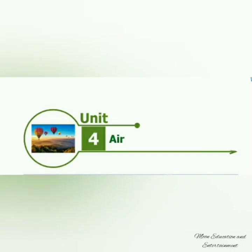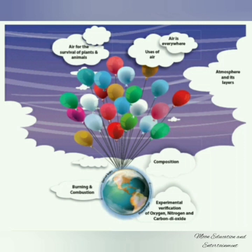Unit 4: Air. Air is one of the essential things for human beings and not only human beings but for all living organisms in the world. Air is necessary for the survival of plants and animals. Air is used for burning and combustion. Air consists of different gases which are used for respiration and other purposes. Air is also present in the atmosphere and its layers.